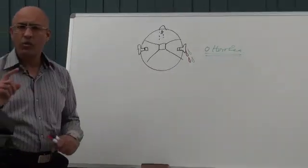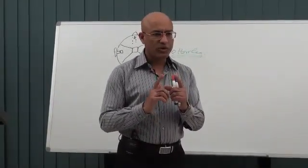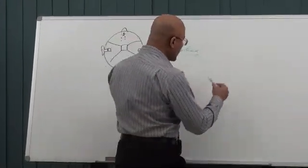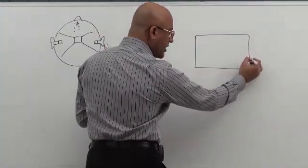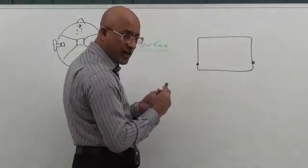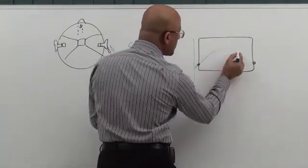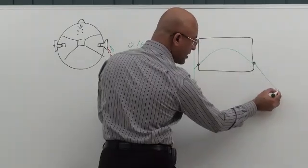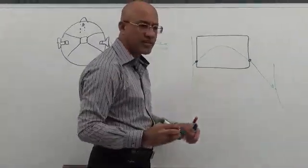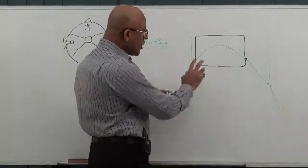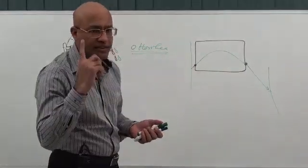Before closing this topic, I want to discuss the relationship of chorda tympani with the malleus. Chorda tympani is a branch of the facial nerve. It enters through a canaliculus in the posterior wall, moves upward, and then exits through a canaliculus in the anterior wall. Chorda tympani eventually joins with the lingual nerve — as already discussed in the facial nerve lecture. What is the exact relationship of chorda tympani with the contents of the middle ear?